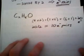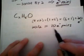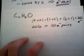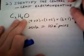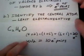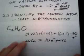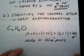So whatever structure we come up with, it better have 10 electron pairs in it. So the next step is to identify a central atom. And the way that we identify the central atom is we choose usually the least electronegative atom.